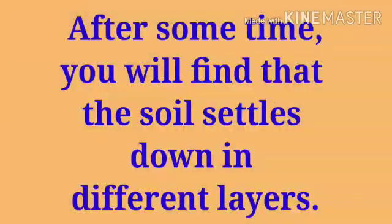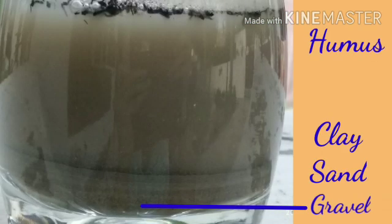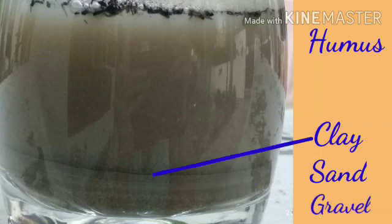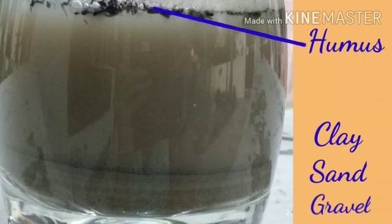After some time you will find that the soil settles down in different layers. Gravel particles are biggest and heaviest so they are first to settle in the glass. Sand particles settle above the layer of gravel. Next to the sand is the layer of clay particles. The floating material on the surface of water is called humus.